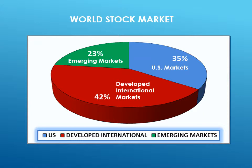The U.S. accounts for about 35% of the world's stock market. Developed countries with stocks are part of the international stock market and make up 42% of the entire stock market, while 23% of stocks are in the frontier and emerging markets. Are emerging market and frontier market stocks riskier? They certainly can be. The markets are less developed, often less regulated, and transactions are done in the local currency, which adds exchange rate risk for a U.S. investor.